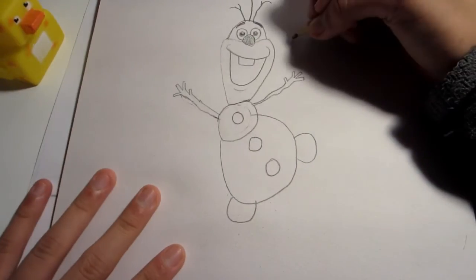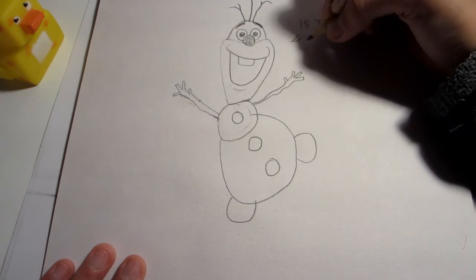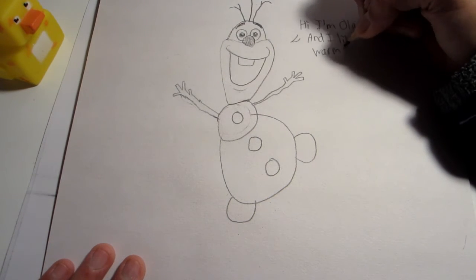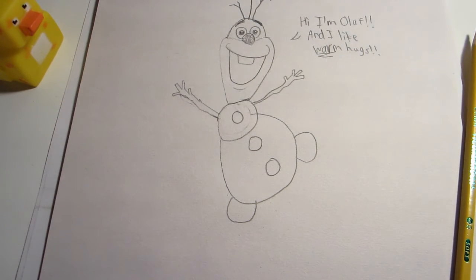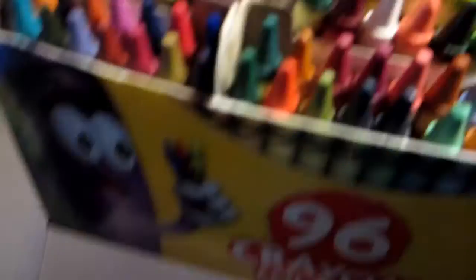And I'm fixing that up. Okay, then I'm writing a message for Olaf saying 'Hi, I'm Olaf and I like warm hugs.' Sorry, my hand is in the shadow most of the time. And then that's Olaf.